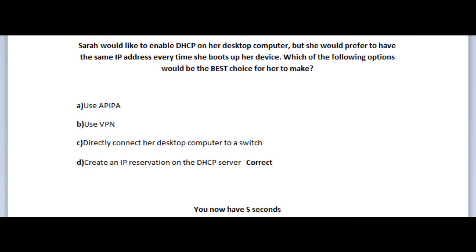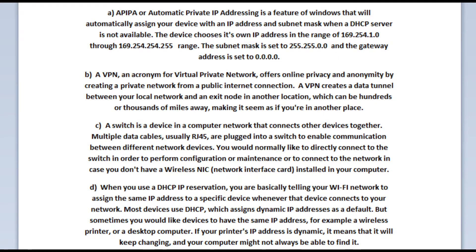If you have read the question carefully, we are asked to choose from the presented list the best option for Sarah to make. In this case, it would be option D to create an IP reservation on the DHCP server. When you use a DHCP IP reservation, you are basically telling your Wi-Fi network to assign the same IP address to a specific device whenever that device connects to your network. Most devices use DHCP, which assigns dynamic IP addresses, as a default. But sometimes you would like devices to have the same IP address, for example a wireless printer or a desktop computer.